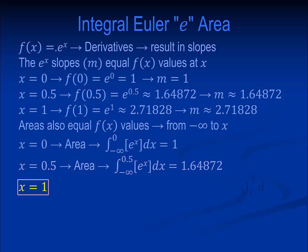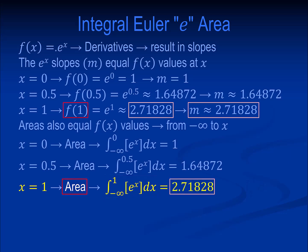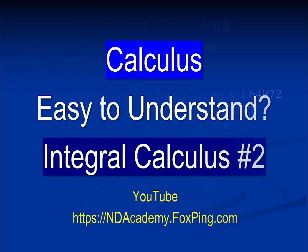When x equals 1, the area integral from minus infinity to 1 equals approximately 2.71828, which is the same as f of 1 and the slope of f of 1. e to the x is an absolutely unique equation. This concludes the simplicity of integral calculus 2.